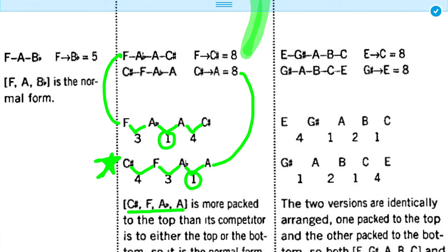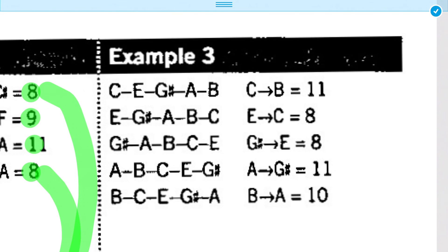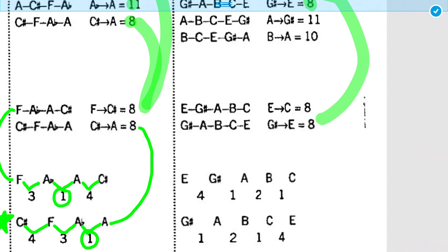Okay, now you might be asking yourself, what if we had had a 1 on both sides? Well, that's what's talked about in example 3. In the set, C, E, G sharp, A, B, again, we have a tie between two forms. So, we have to decide between E, G sharp, A, B, C, and G sharp, A, B, C, E.